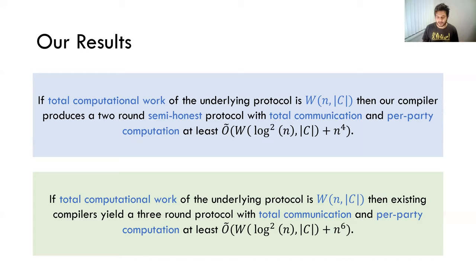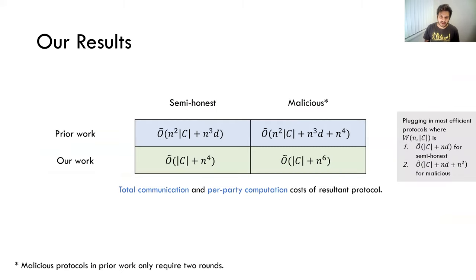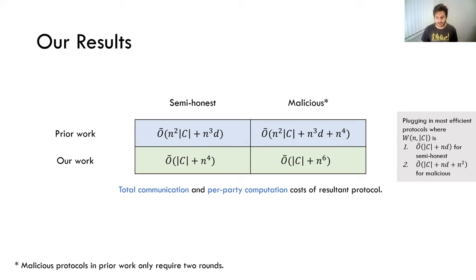It's a three-round protocol and not a two-round protocol like prior compilers. For this work, we're going to focus only on the semi-honest setting. Let's see what our results imply when instantiating the most efficient protocols. The prior work, even in the semi-honest setting, gives an n² overhead. Our work gets rid of the n², and the additive overhead isn't too much larger than in prior works. In the malicious setting, we have n⁶ additive overhead, which is somewhat comparable to n⁴, though prior malicious protocols are two rounds while ours is three rounds.